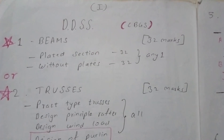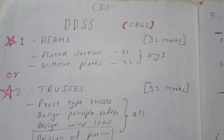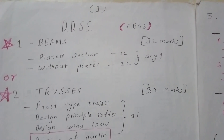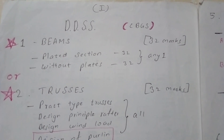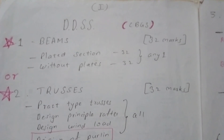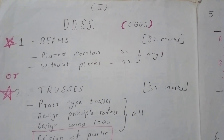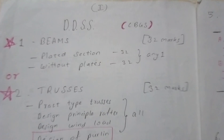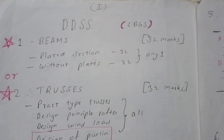For the first question, after drawing and solving the full sum, we should expect around 20 to 25 marks. We can't expect full marks for drawing. Numericals may give 20 to 22 marks, and drawing may give 4 to 10 marks. The full 32 marks is unrealistic to expect.